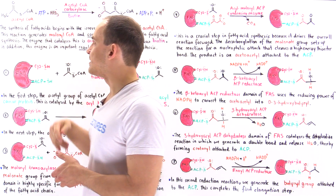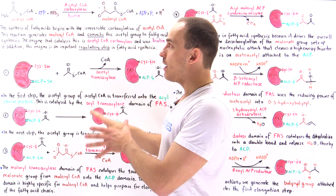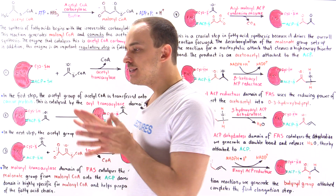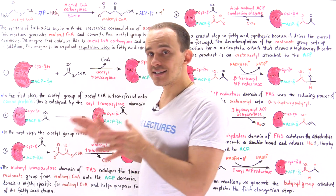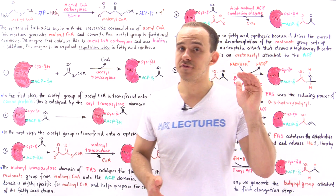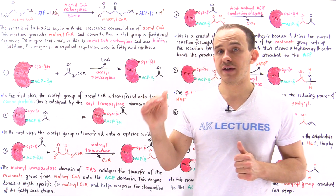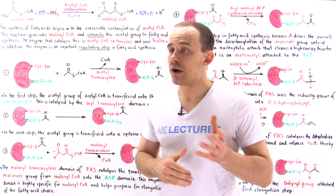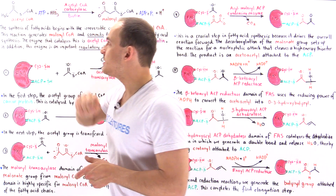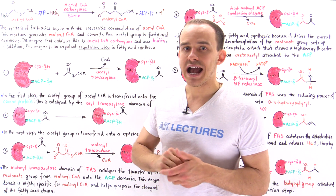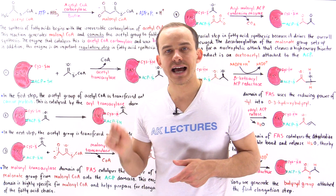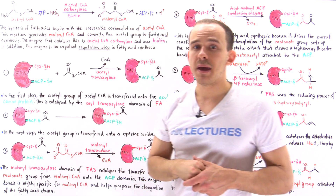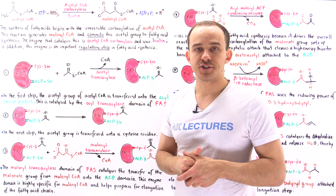We have the acetyl coenzyme A molecule in the cytoplasm of the cell. If the conditions are right for fatty acid synthesis — that is, if we have high levels of citrate and high levels of ATP — then that will promote fatty acid synthesis. This means we're going to commit the acetyl coenzyme A molecule to actually undergoing fatty acid synthesis. This is the step that commits acetyl coenzyme A to helping form the fatty acid chain.